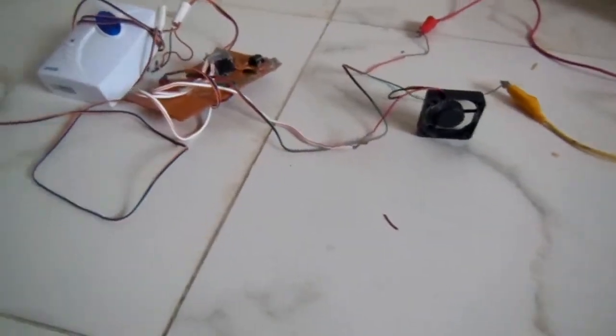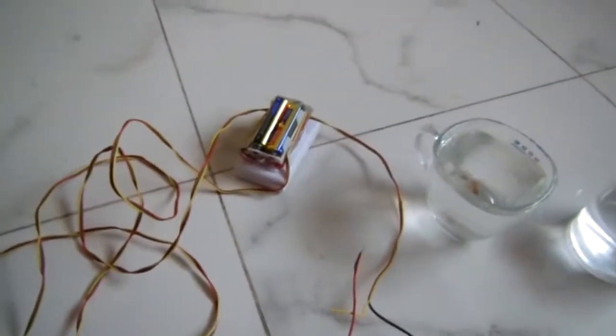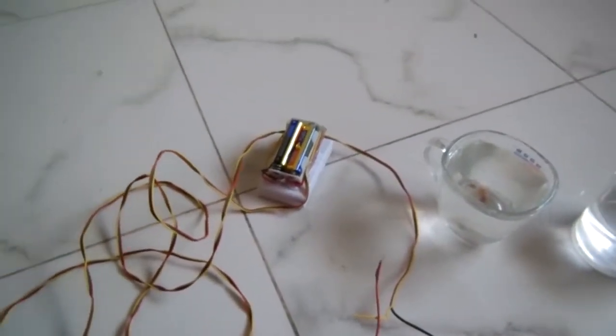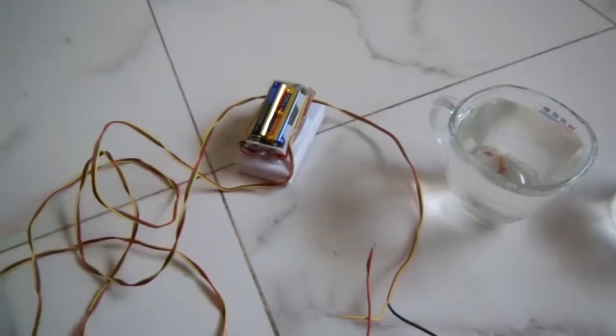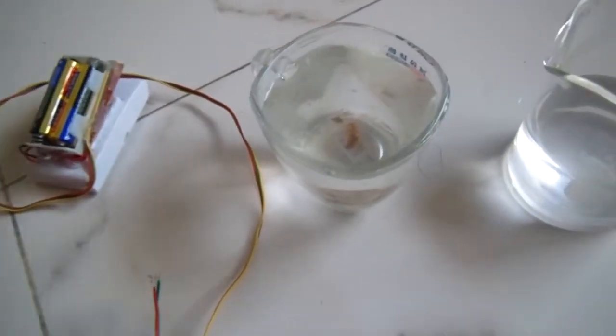So this is the wireless water level controller. There is no wire between them as you can see. We can control the water level. This range is about 20 degrees, so we can control the water level from 10 to 50 meters, 100 meters working range for a wireless system. We are controlling the water level. Thank you for watching the video.